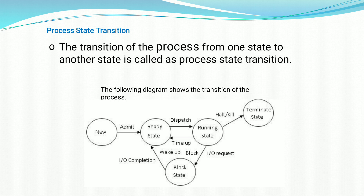Sometimes we assign a time slice for each process in the processor. If the time gets expired, the specific process which is in the running state will be moved back to the ready state. Sometimes the process gets executed, completes its work, and enters the terminated state — that is, the process is killed or halted.